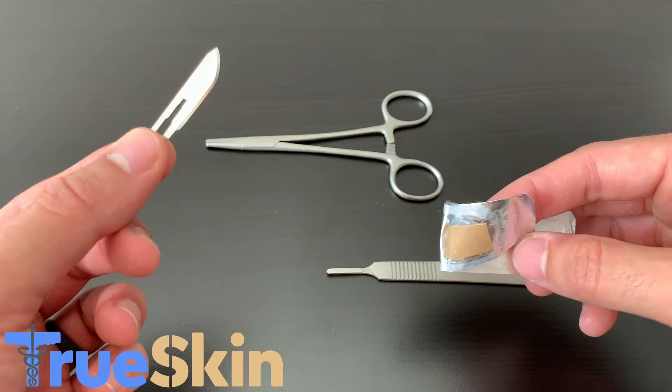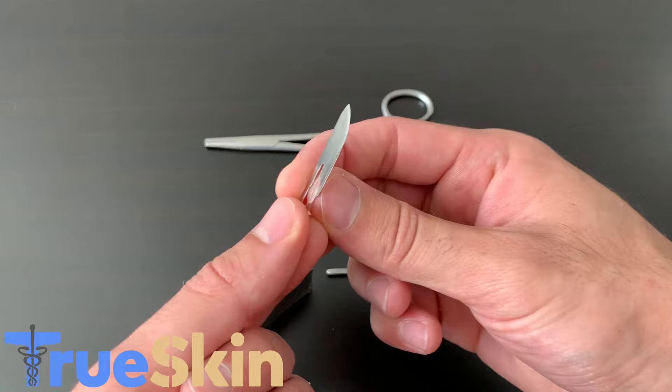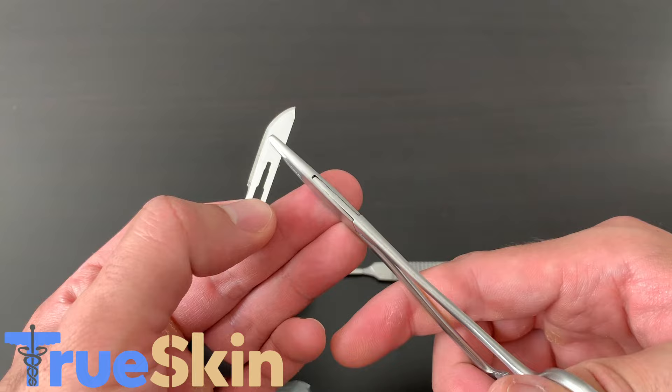You'll notice that the curved side is the sharp, active side, so we'll want to stay away from that. Rotate the active side to the left, and then with your needle holders, get a secure grip on the back side of the blade.